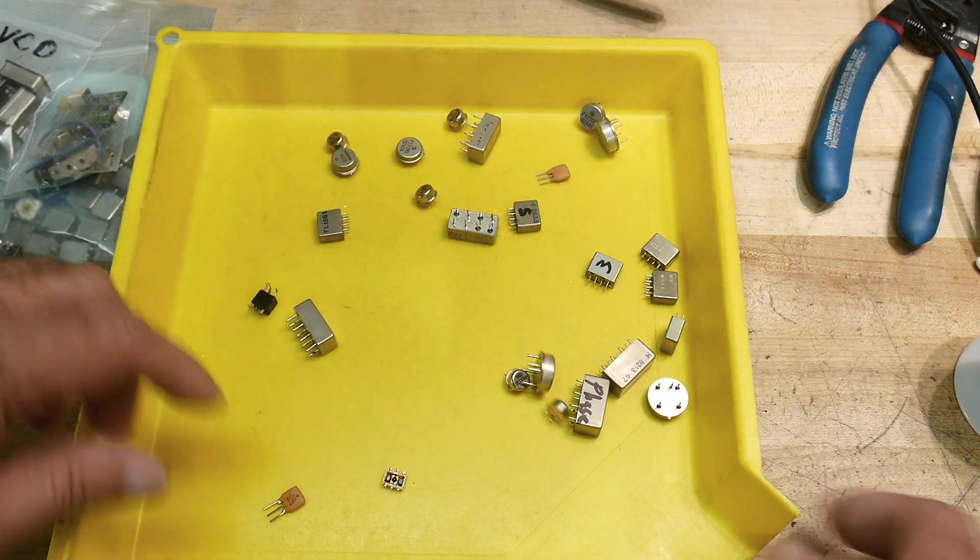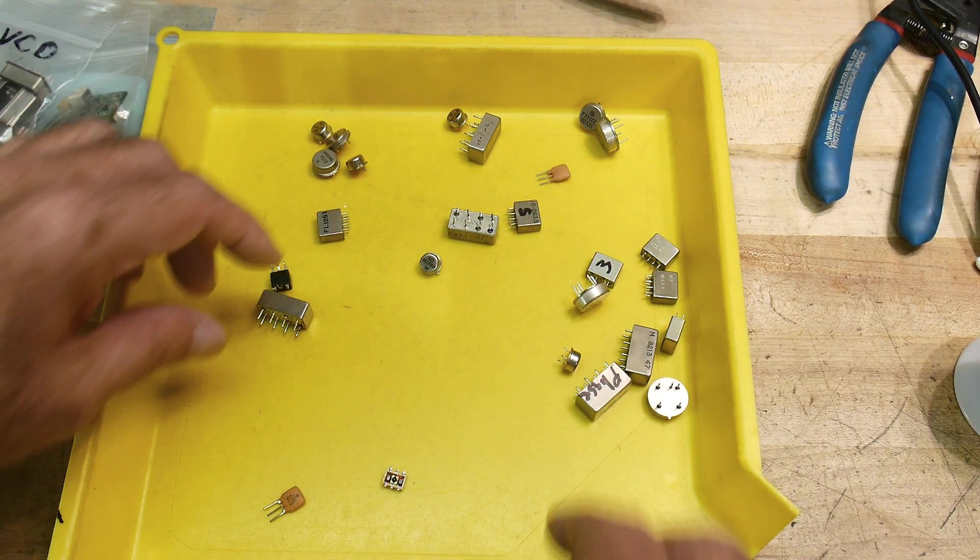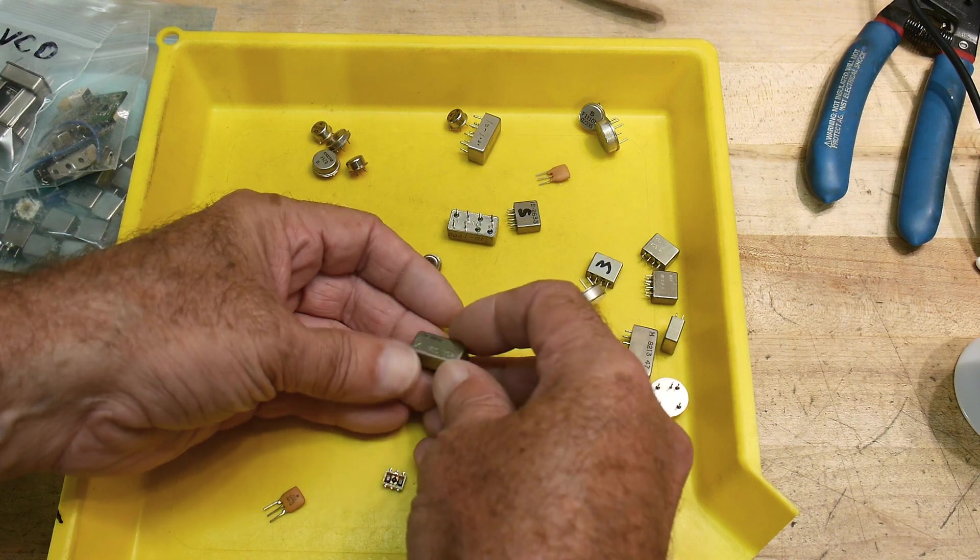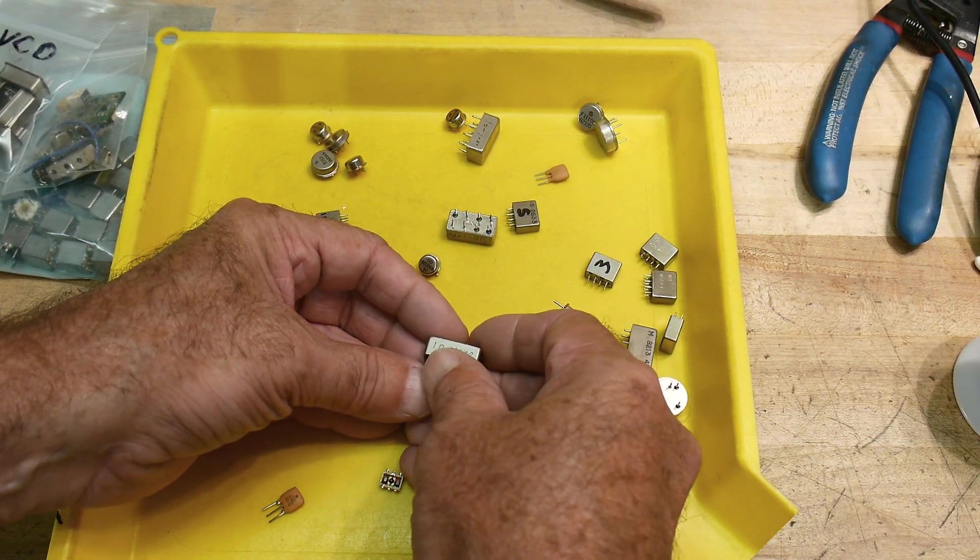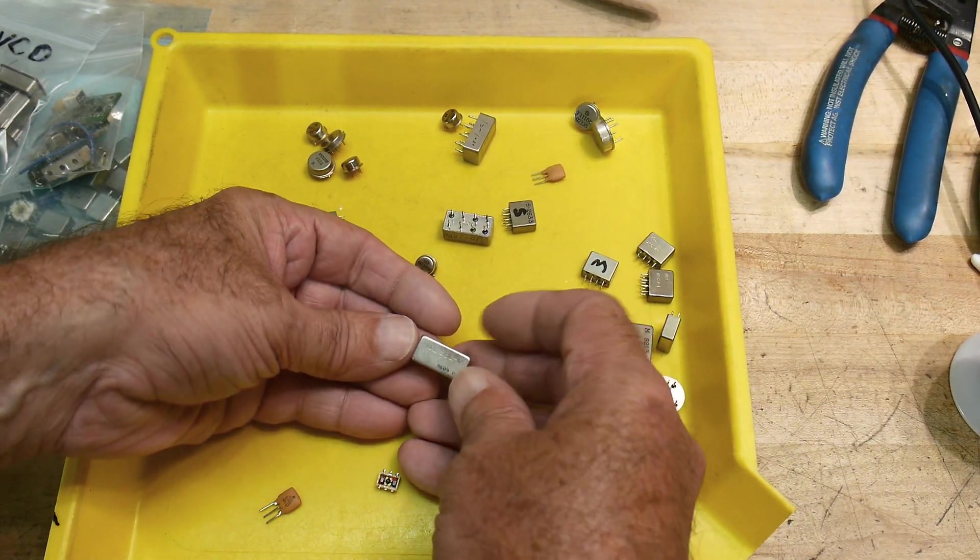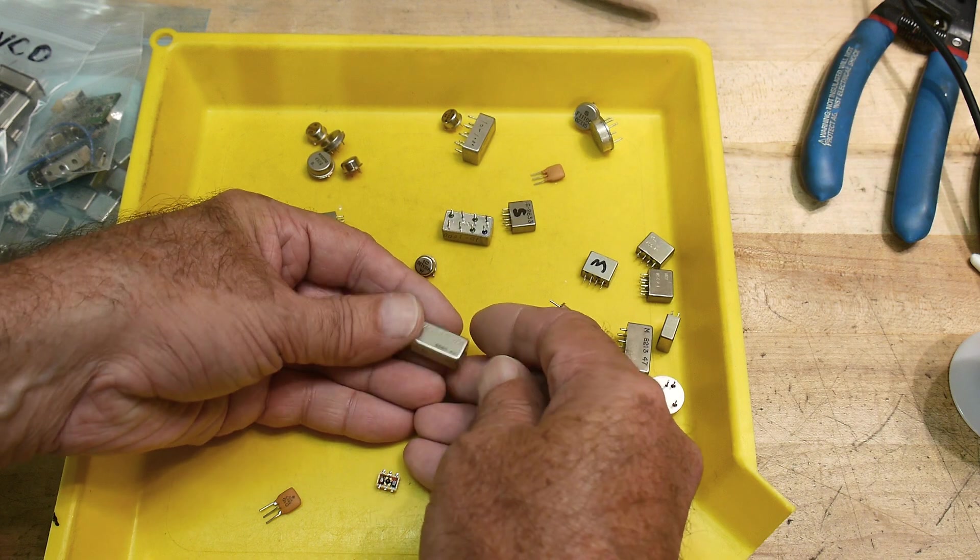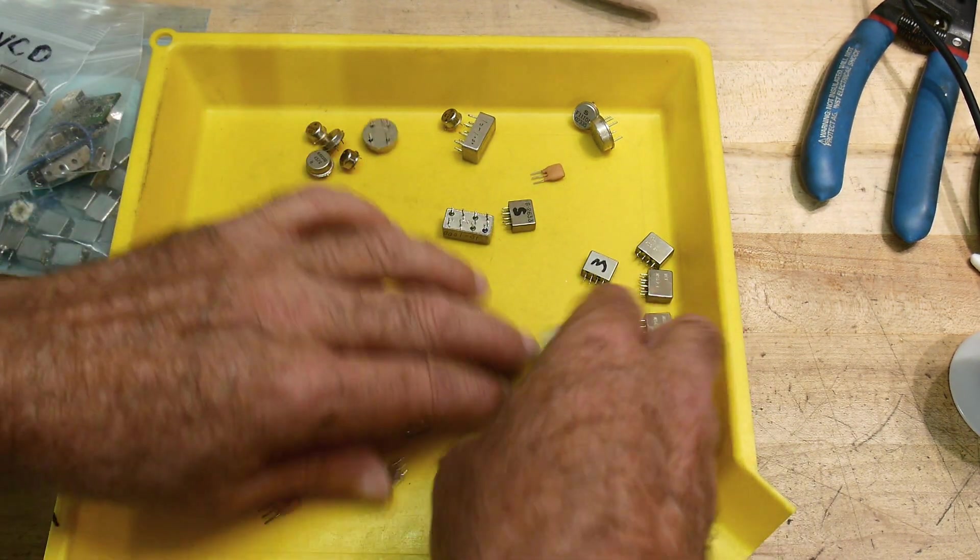And I've got some amplifiers, these roundy can things are amplifiers. Some of these things look like they might be mixers, and in fact, this one is a mixer. That's a 10 megahertz to 1 gigahertz mixer. This is Mini Circuits, so I've got some of those. And then I've got little bitty cans.